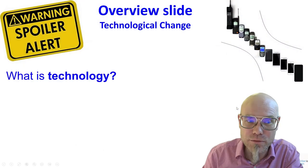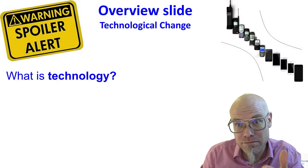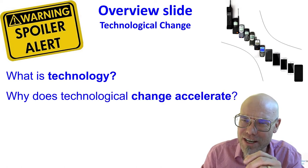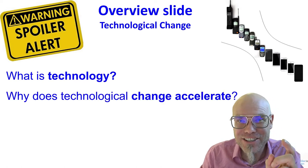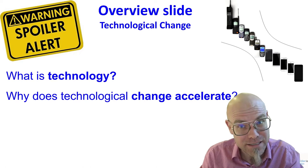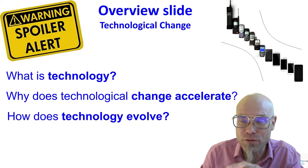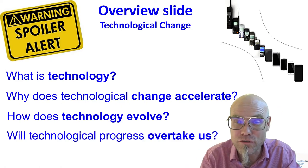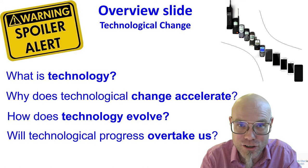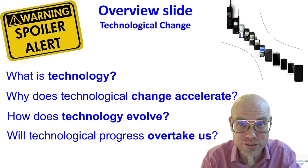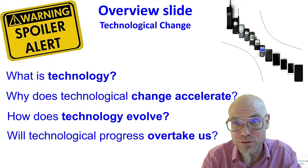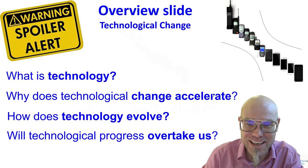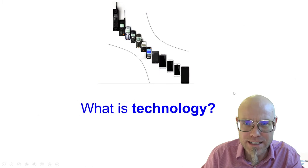We will do that in different steps: first, what technology is; second, why does technological change accelerate — which has to do with what it is; third, how does technology evolve; and finally, will technological progress overtake us — the technological singularity, when machines overcome us. It focuses on digital technology, but let's start with: what is technology?